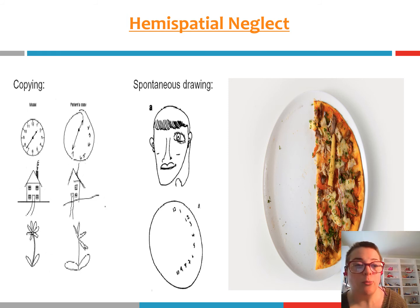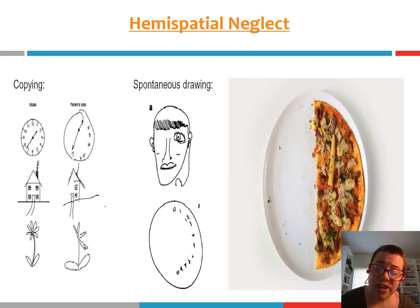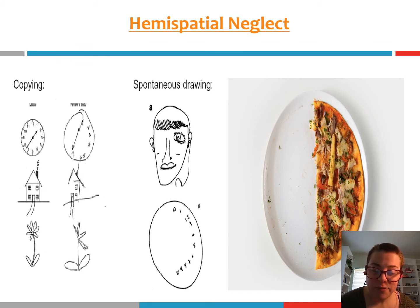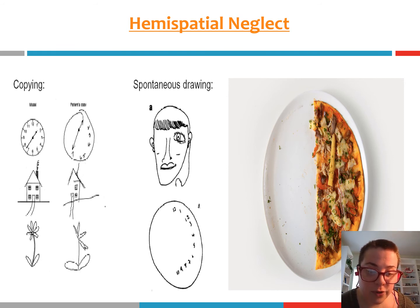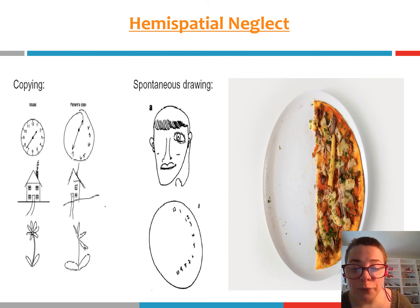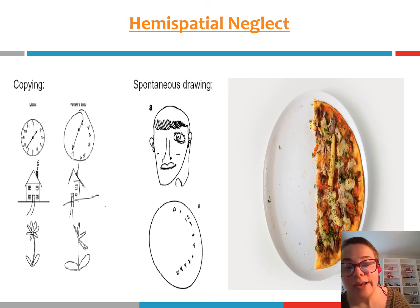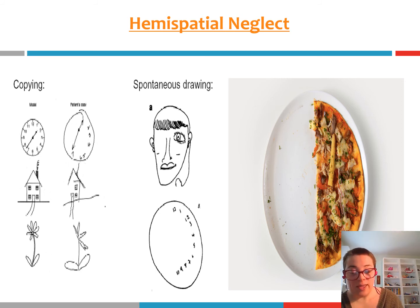The reason it's usually the right hemisphere is that if you damage the left hemisphere, there is actually representation in the brain on both hemispheres for perceiving the right side of space, so you can still rely somewhat on the right hemisphere. But if you damage the right hemisphere, it is solely responsible for the perception of the left side of space. Whatever hemisphere is damaged, you're going to have difficulty perceiving the opposite side of space.